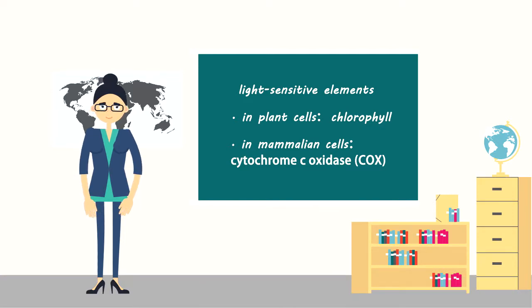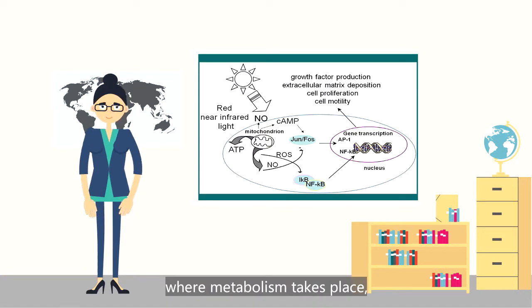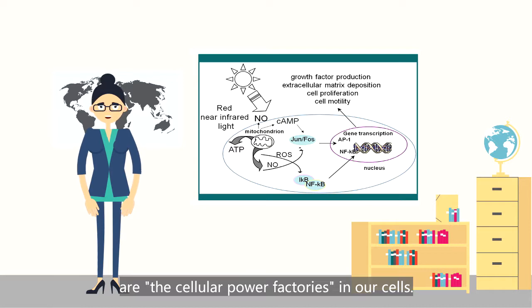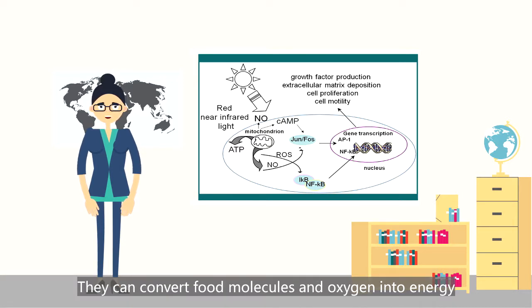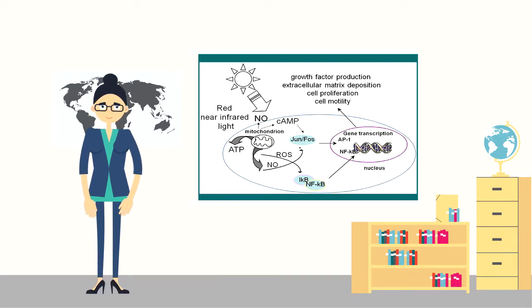Mitochondria, where metabolism takes place, are the cellular power factories in our cells. They can convert food molecules and oxygen into energy by oxidative phosphorylation.